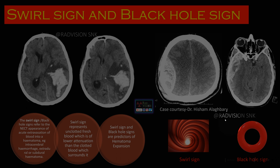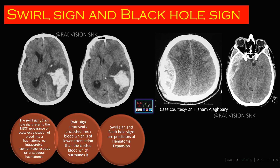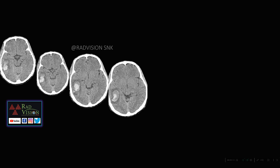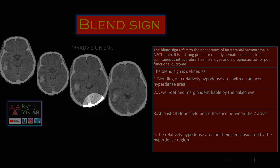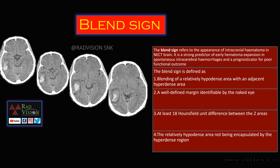Next case — what is the blend sign? The blend sign is defined by two areas: one very hypodense area representing active extravasation of blood or unclotted blood, and one very hyperdense area representing clotted blood. The blend sign is also a predictor for hematoma expansion.